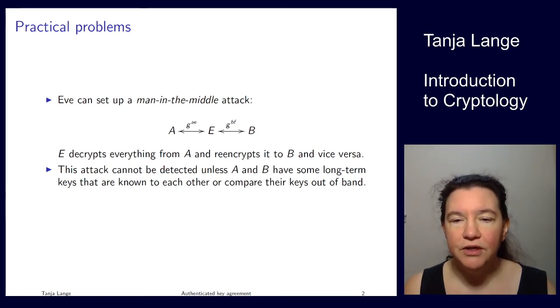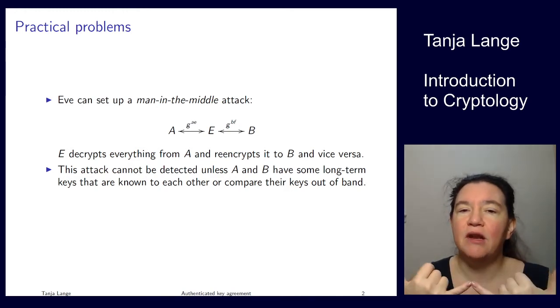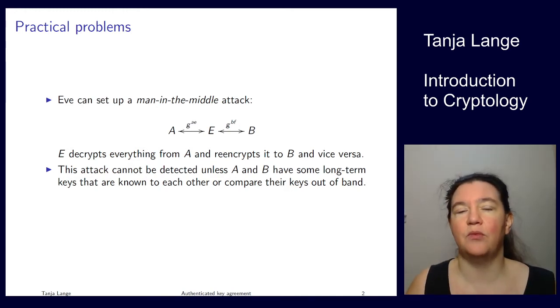One of the issues in Diffie-Hellman is that there's two parties, Alice and Bob, who each pick some secret exponent and get a shared key. But they cannot figure out whether there's something in the middle, whether there's an Eve who is relaying all messages.